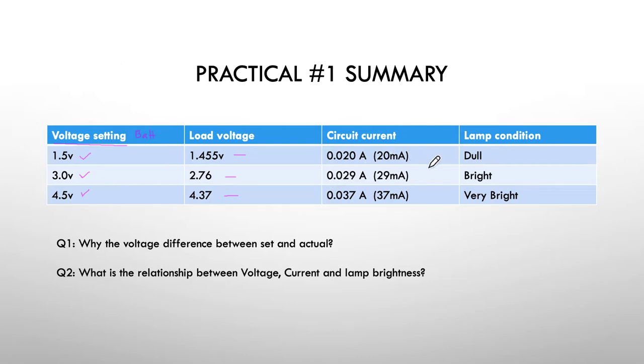And then we had our currents. So we started at about 21 milliamps and our light was dull. We increased to 29 milliamps and it got quite bright. And then we increased to 37 milliamps and we got very bright.